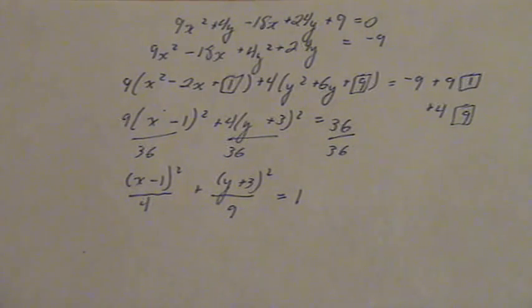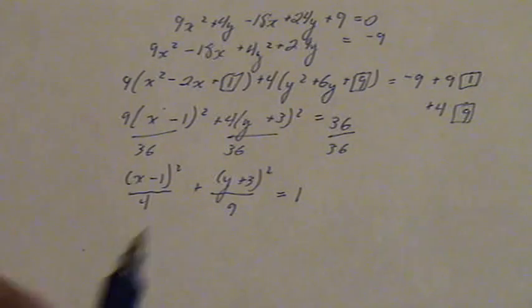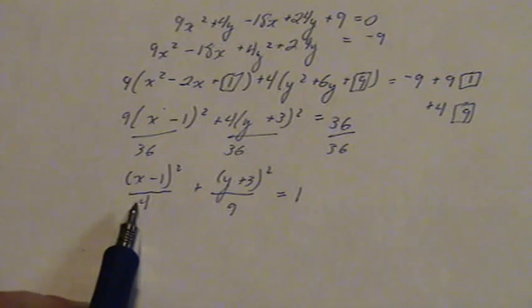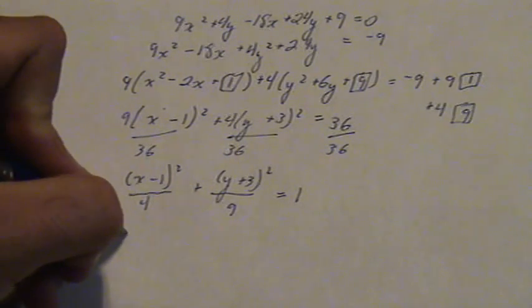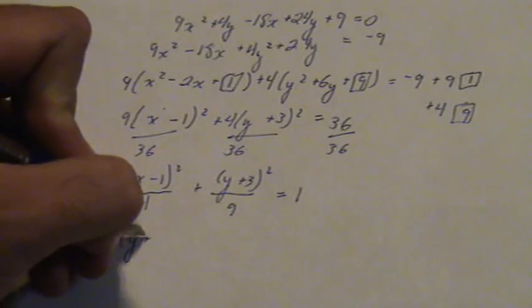But for ellipses, a squared is also always the bigger one. 9 is obviously bigger than 4. So to get this into standard form, we still need to turn it around.